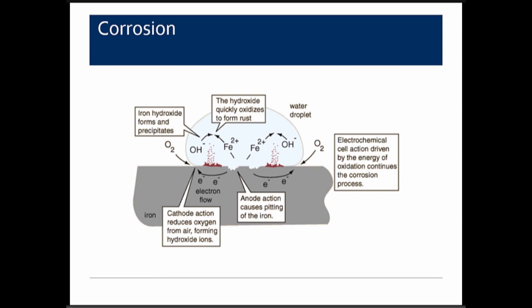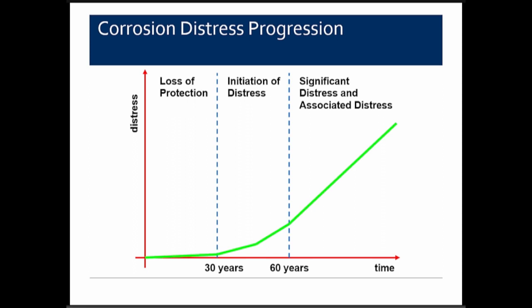Regarding corrosion: as a general guideline, in the first 30 years steel has some protective nature with little corrosion. Between 30 and 60 years, corrosion begins and distress in units increases. Beyond 60 years, significant distress and failures can occur. In major cities, about 50 years after construction is when many cornices started coming down because maintenance wasn't performed and steel distress became significant.